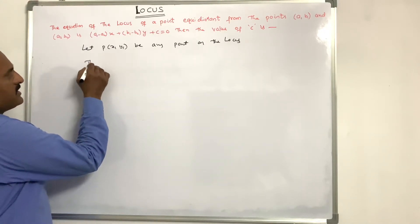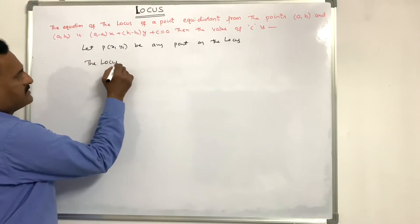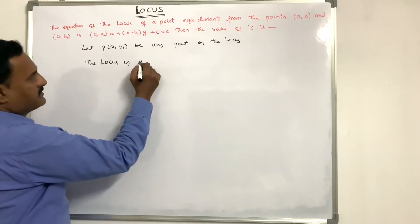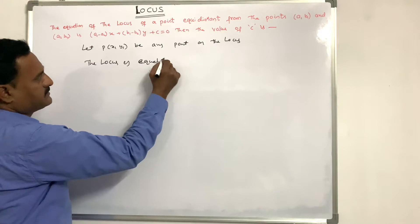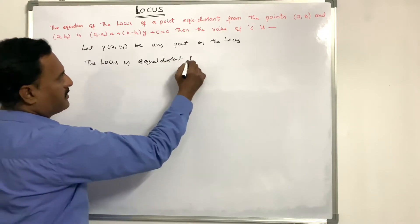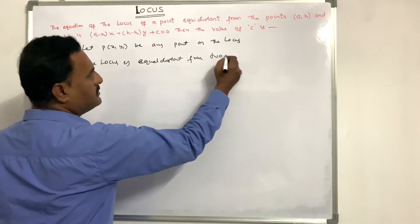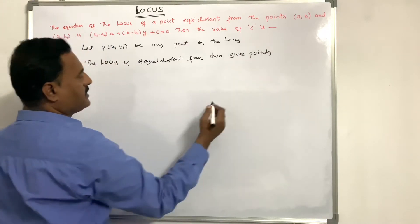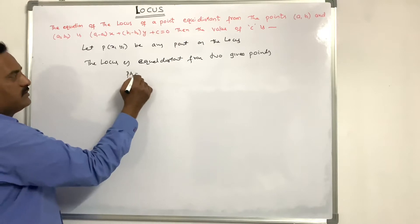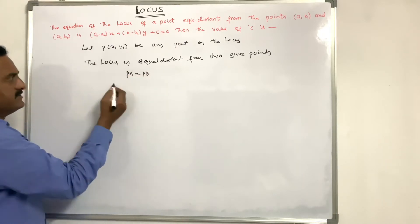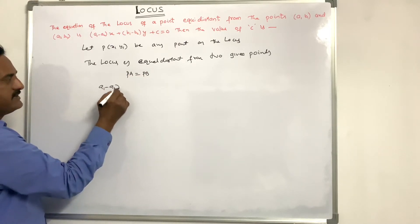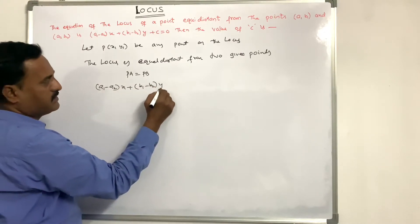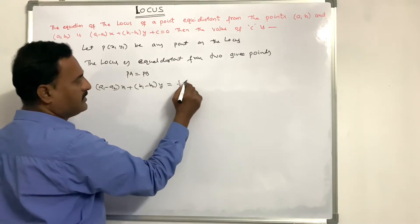The locus is given as equidistant from two given points. That is PA equals PB. This can be written as (a1 minus a2) into x plus (b1 minus b2) into y is equal to 0.